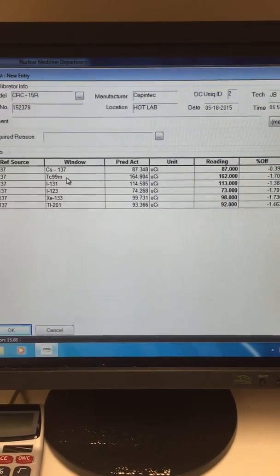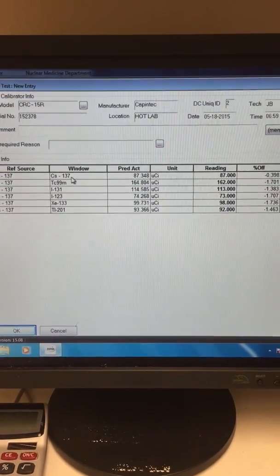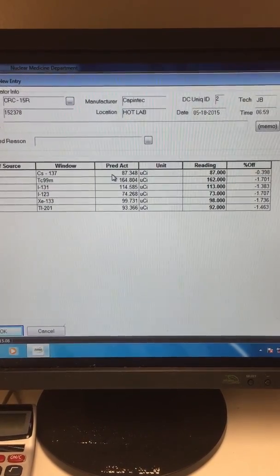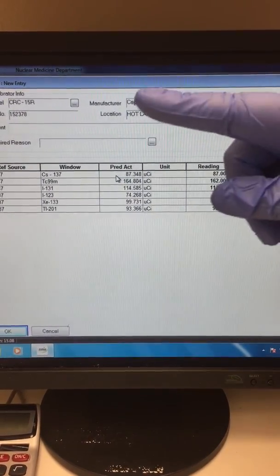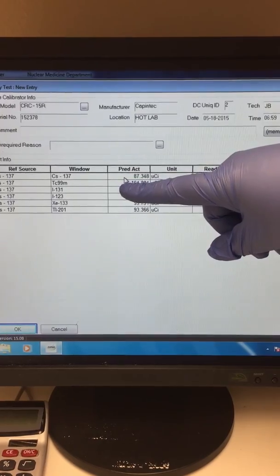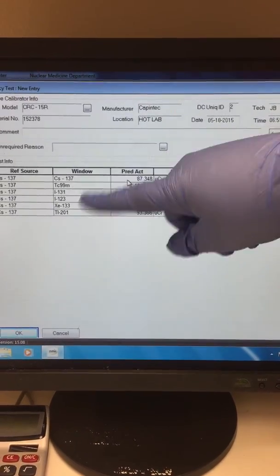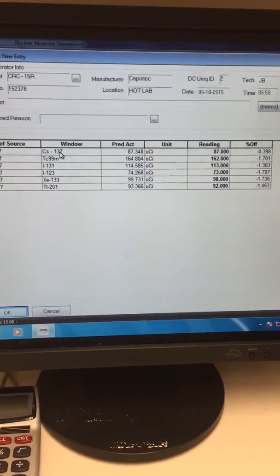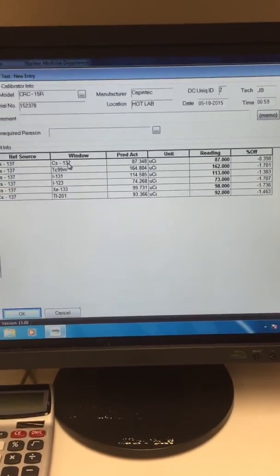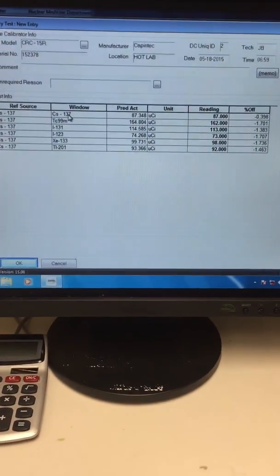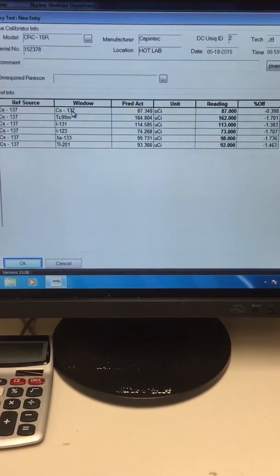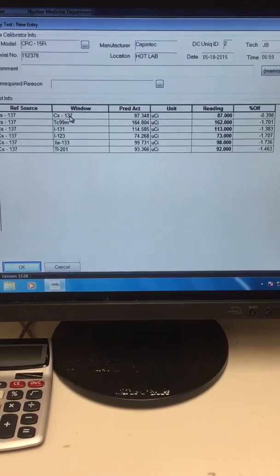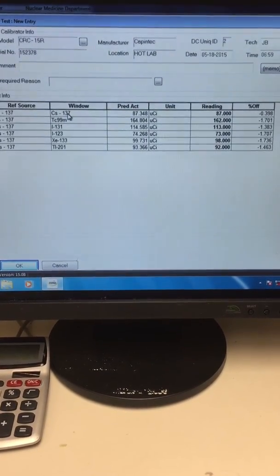So we base all of these readings off of our cesium-137 source. And based on that source activity, we get the target activity of each isotope channel. And the reason we like to use this source is because it has a long half-life of 30 years. So it decays very slow. So it has a constant, pretty constant activity. So it's good for a constancy test.